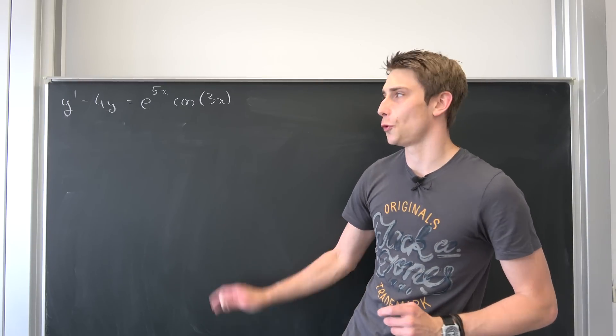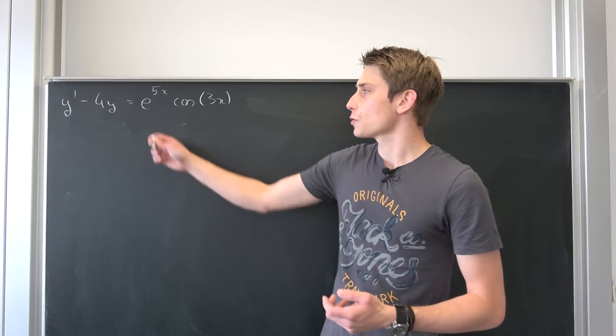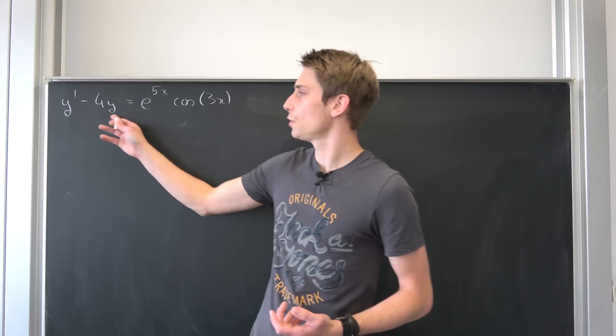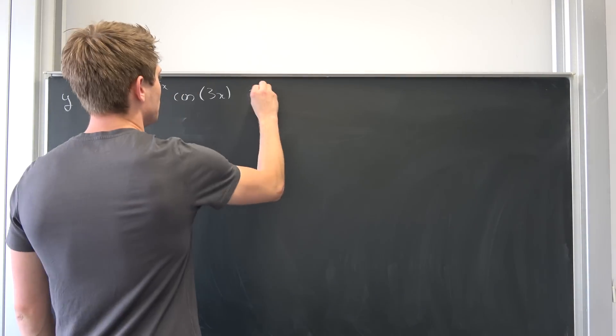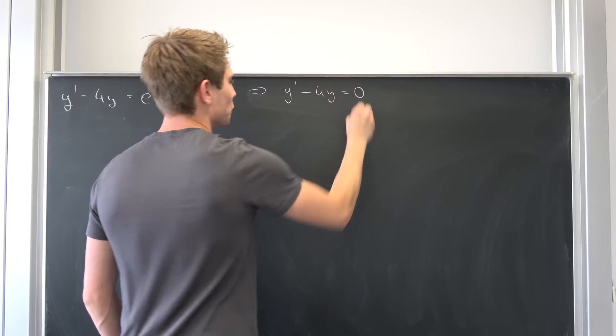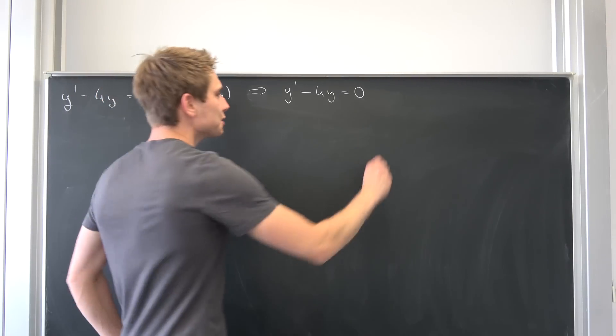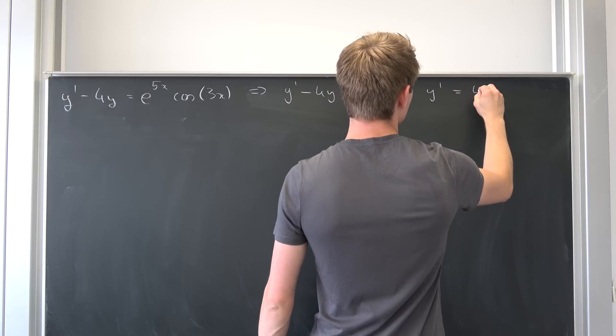So here's an algorithm for solving something like this right here. So at first we are going to set this function of x equal to zero. That means we are going to solve the homogeneous version of this differential equation. So that means we end up with y prime minus 4y being equal to zero. And now we can add 4y on both sides.